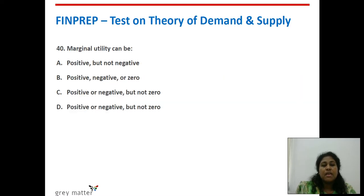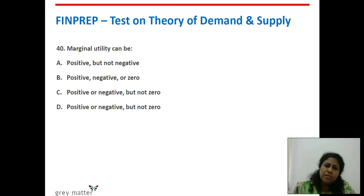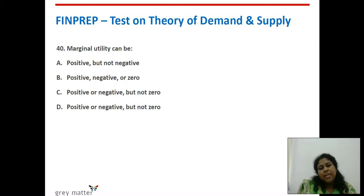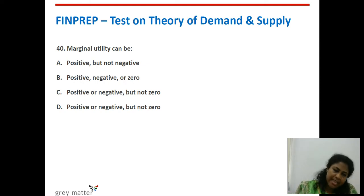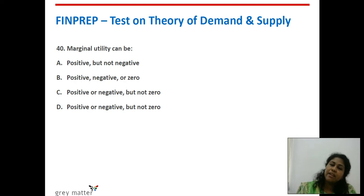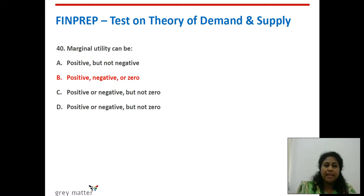Fortieth question: marginal utility can be what? Marginal utility decreases — it will be positive, then it becomes 0 when it touches the X-axis, and then further down it becomes negative as we enter the negative axis. So marginal utility can be positive, negative, or zero. Option B is the right answer.